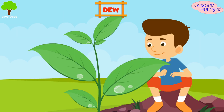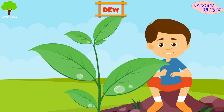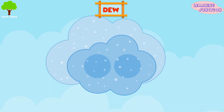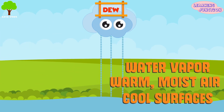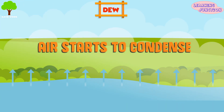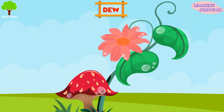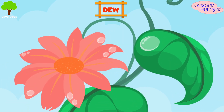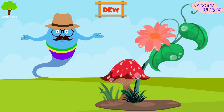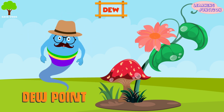Dew. At dawn, very small drops of water often cling to grass and plants. This moisture is known as dew. Air contains water in the form of gas, which is called water vapor. When warm, moist air passes over cool surfaces, the air gets cool. The water vapor in the air starts to condense and changes into small drops. The drops cling to cool surfaces such as leaves and flower petals. The temperature at which condensation begins to happen is called the dew point.